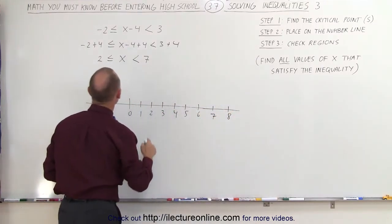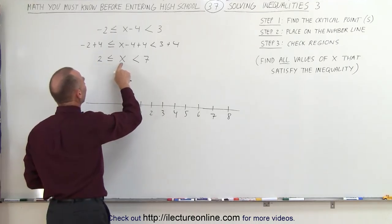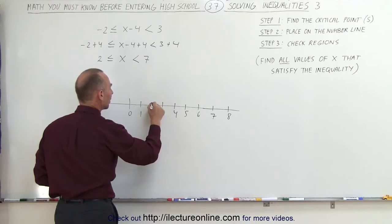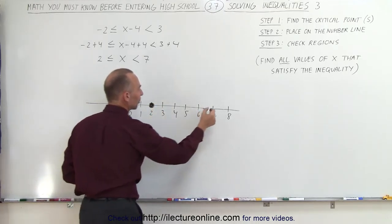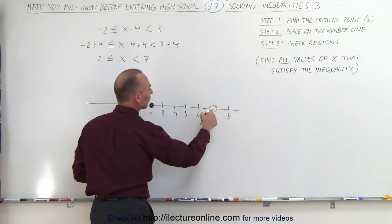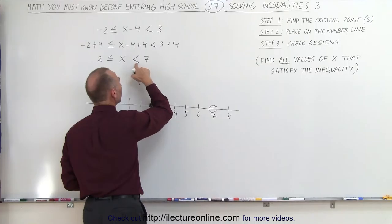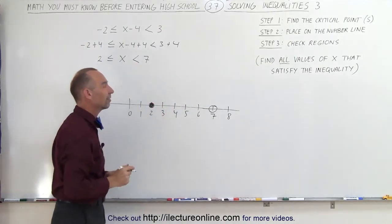Notice that 2, x is greater than or equal to 2, so 2 is a critical point, but we have to fill in the little circle because it includes 2 as an answer. And then we have to put another circle around 7. We keep it hollow. We don't fill it in because 7 is not including the answer because it doesn't say equal to here, only less than 7.